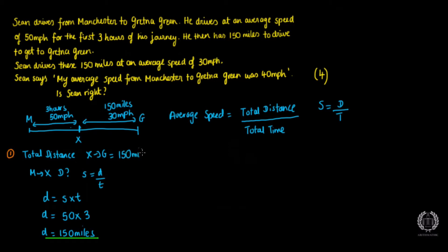So the total distance is 150 miles (M to X) plus 150 miles (X to G), which gives us a total distance of 300 miles. That's my total distance found.